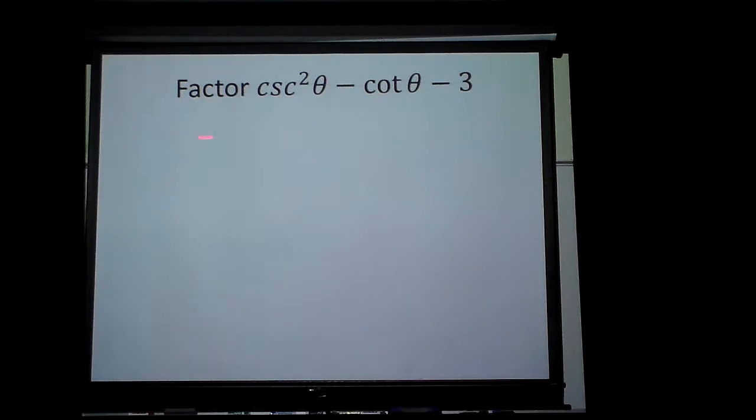Well, cosecant is one over sine. Cotangent is cosine over sine. I don't think that's going to help. Oh, wait a minute.